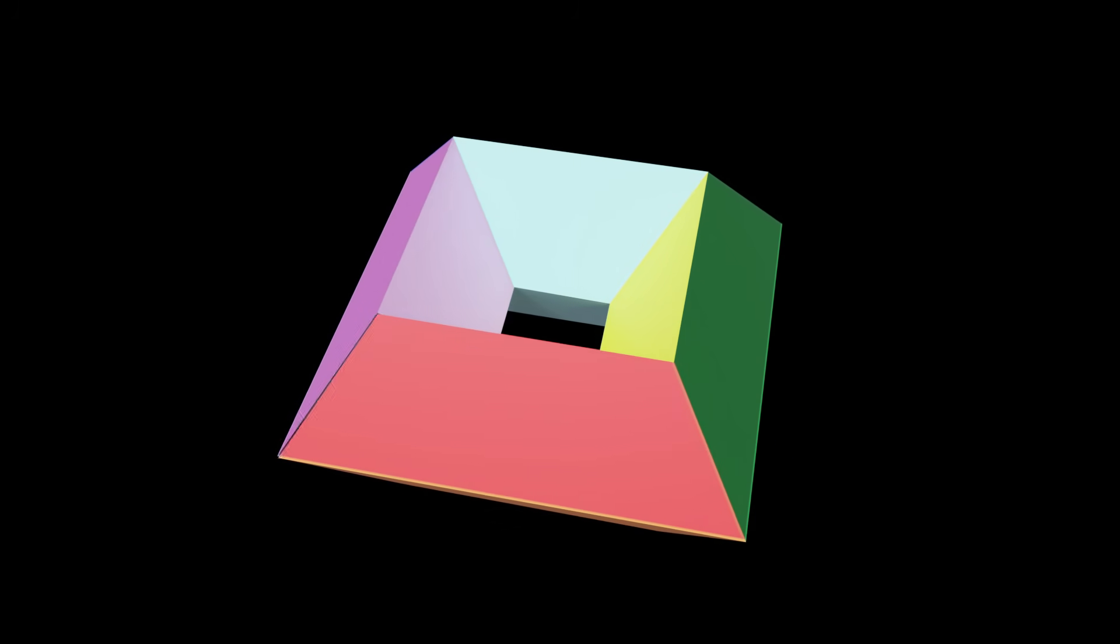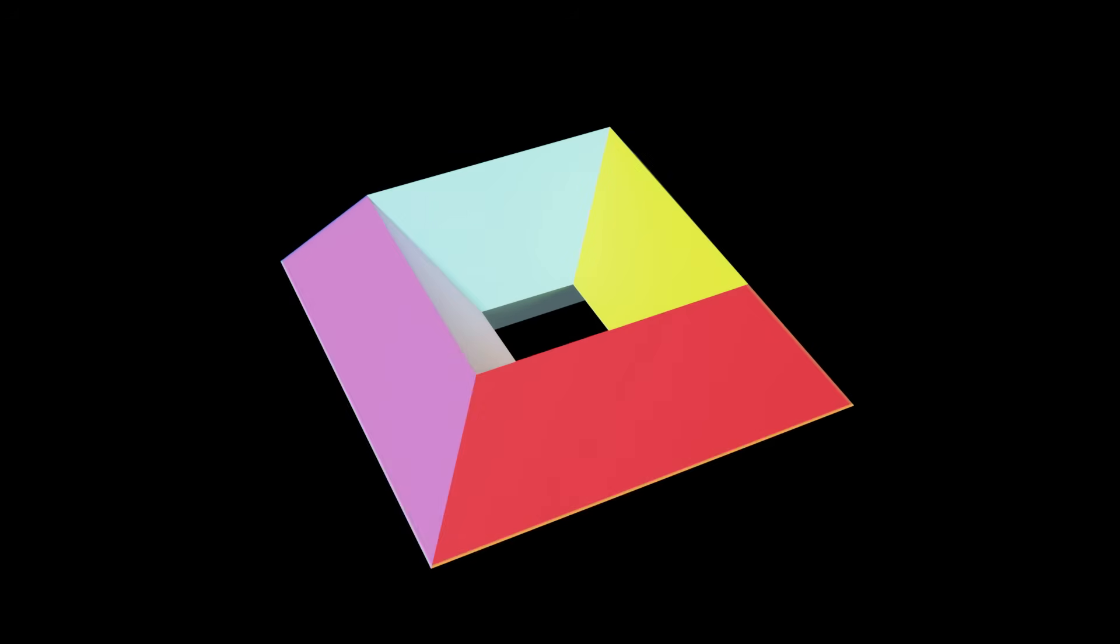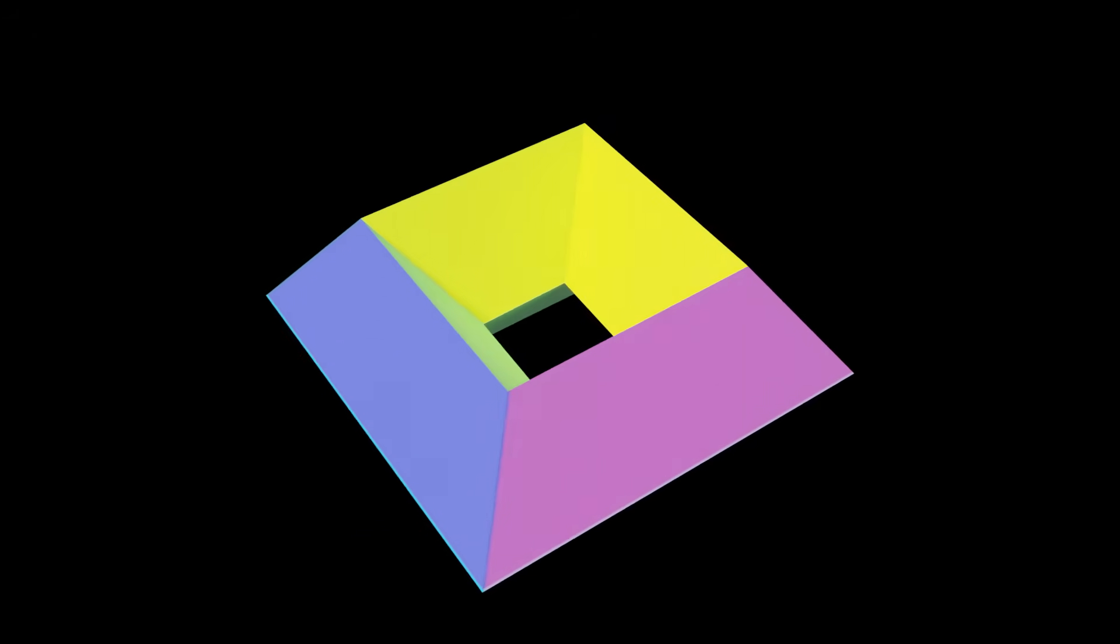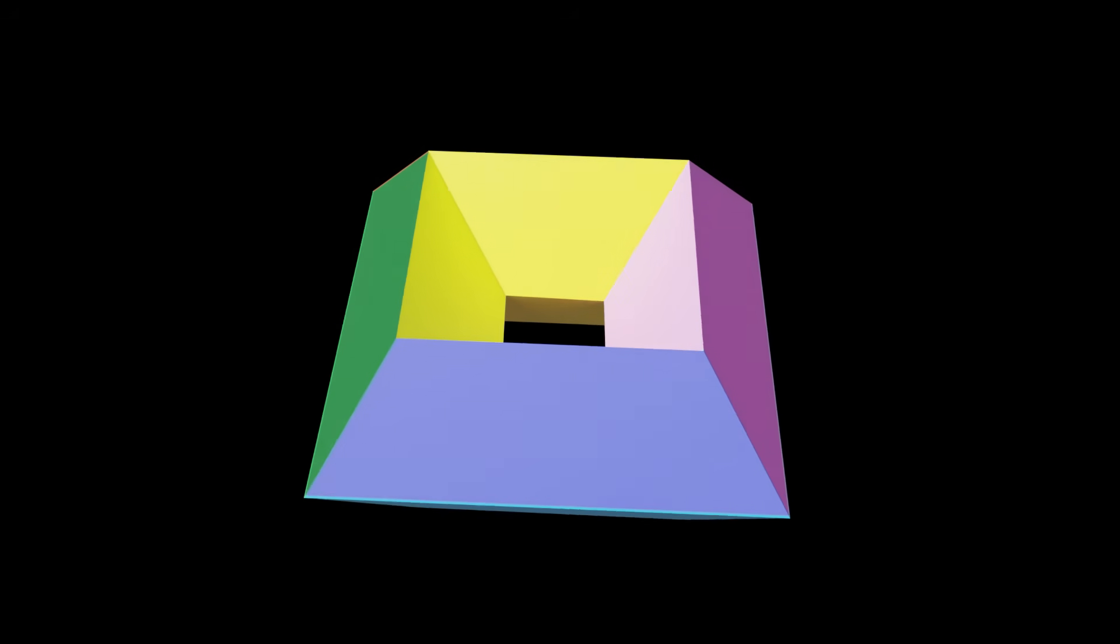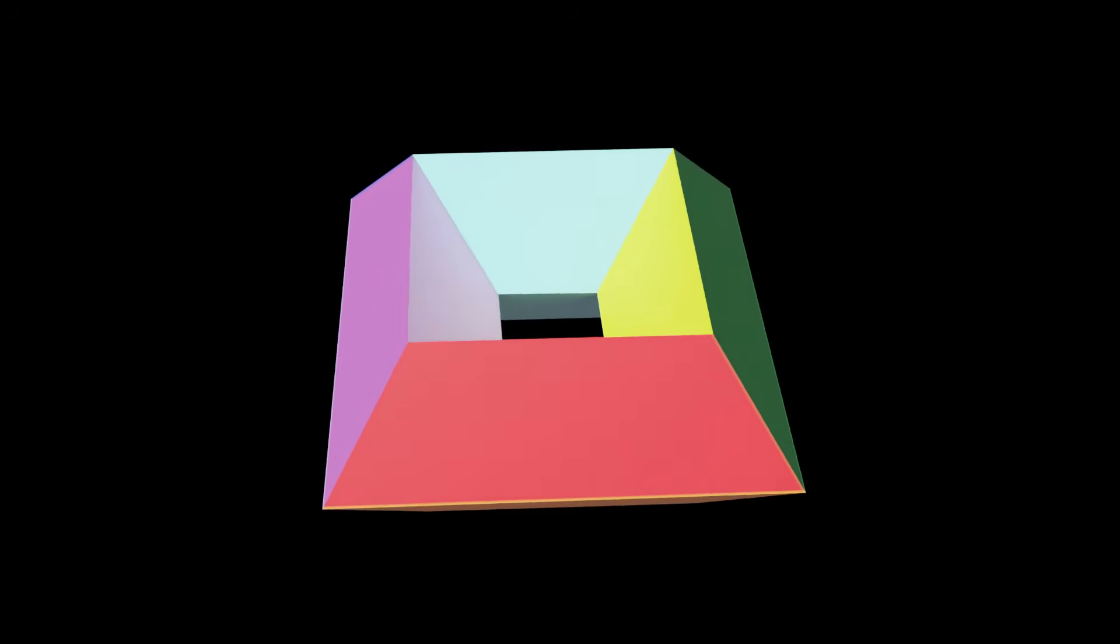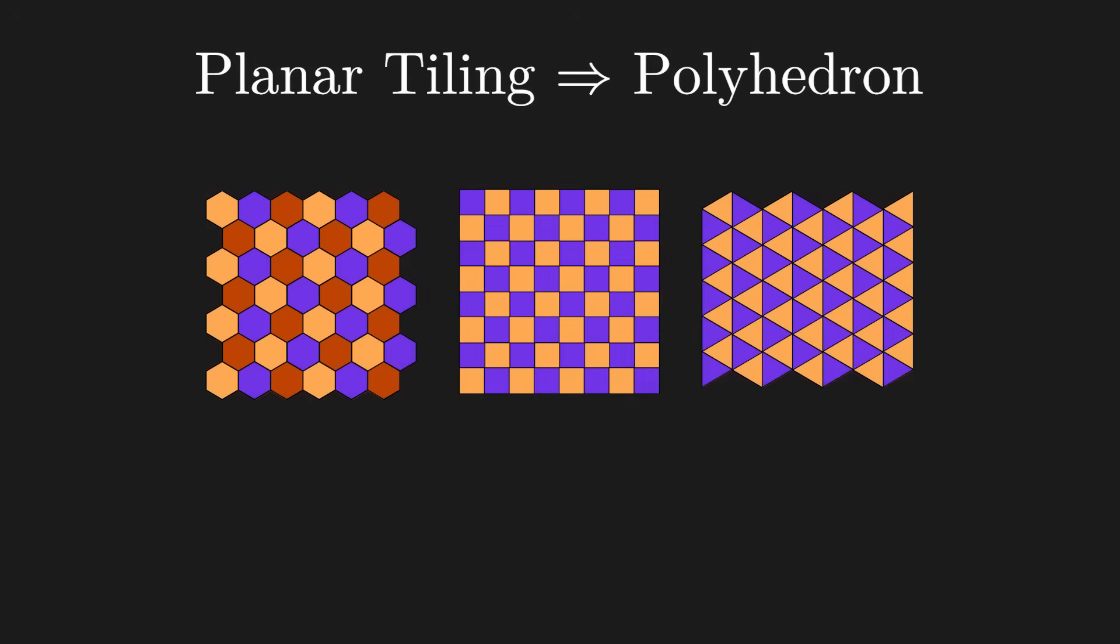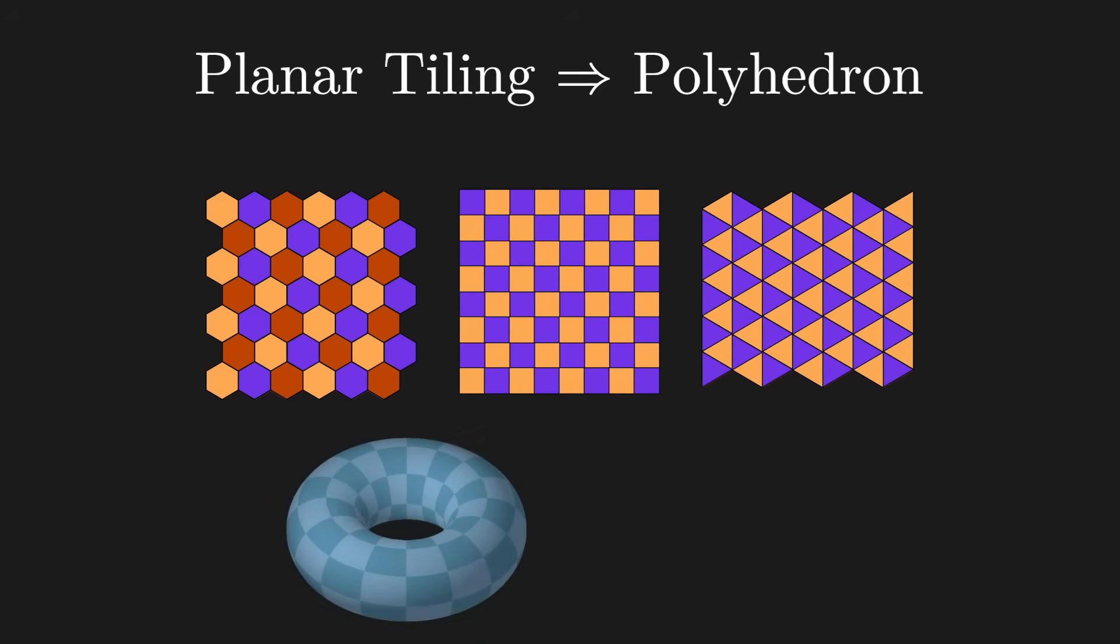So let's connect them that way to make a polyhedron. This side just needs to connect to this side, and this one to the other side. Let's try it and see what happens. Hey wait a minute, that's just a donut! And it's combinatorially regular. All the faces have four sides, and all the vertices connect four faces.